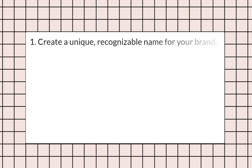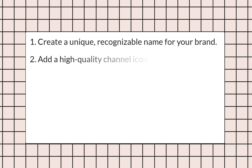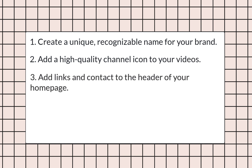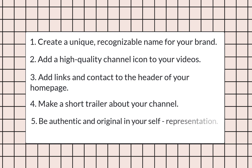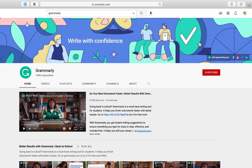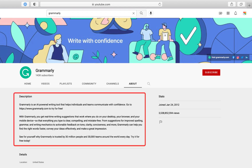Step 6 — super important: brand recognition. Build a channel that users can trust and remain consistent when branding your videos. Tips to earn credibility: create a unique recognizable name for your brand, add a high-quality channel icon, add links and contacts to the header of your homepage, make a short trailer about your channel, and be authentic and original. A great example is Grammarly — easy-to-remember name, high-quality channel icon, links and contacts, a short trailer, and a nice description.